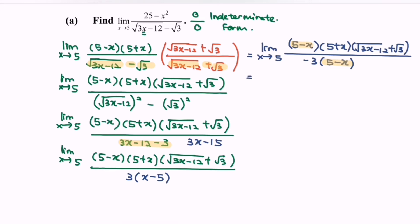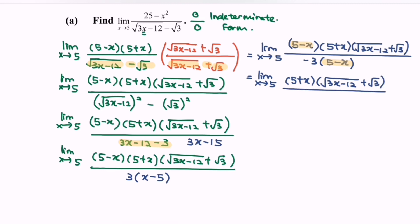After canceling the common term (5 minus x), we have the limit as x approaches 5 of (5 plus x) times (square root of 3x minus 12 plus square root of 3) over negative 3. Substituting x equals 5: we get 10 times (square root of 15 minus 12 plus square root of 3), which is 10 times (square root of 3 plus square root of 3), giving 10 times 2 square root of 3, over negative 3.